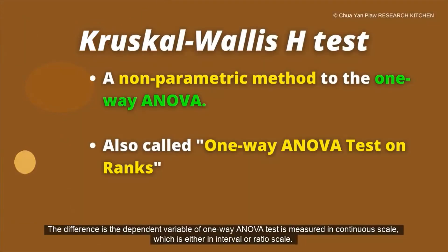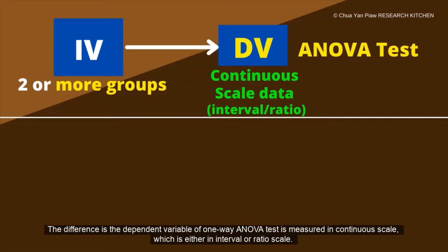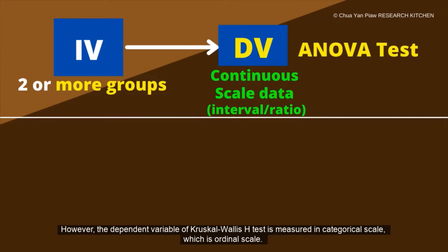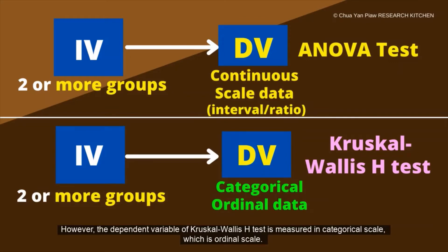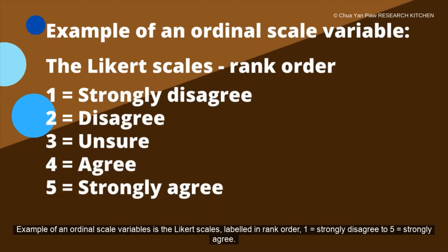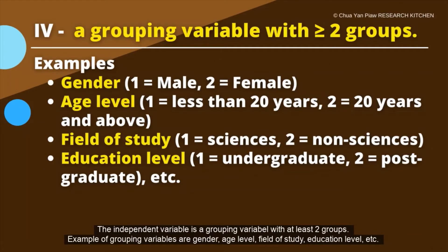The difference is the dependent variable of the one-way ANOVA test is measured on a continuous scale, which is either interval or ratio scale. However, the dependent variable of the Kruskal-Wallis H test is measured on a categorical scale, which is ordinal scale. An example of an ordinal scale variable is the Likert scale, labeled in rank order from 1 equal to strongly disagree to 5 equal to strongly agree.